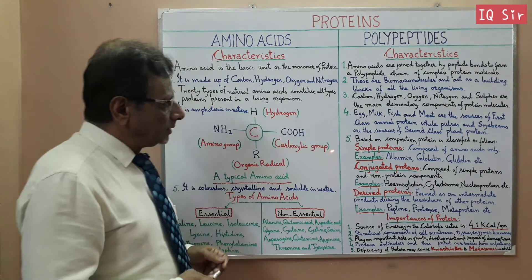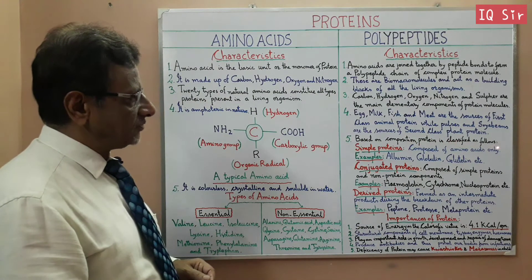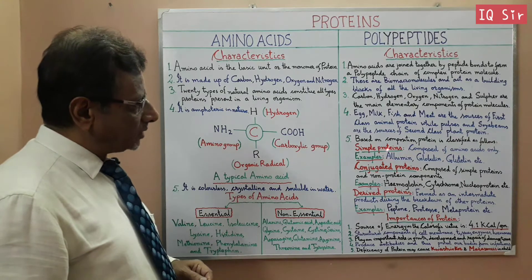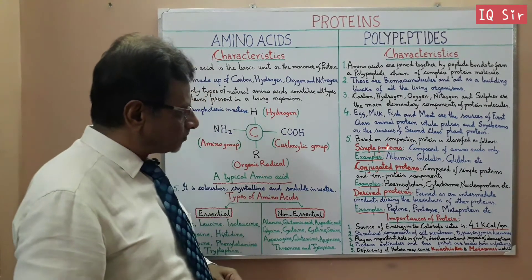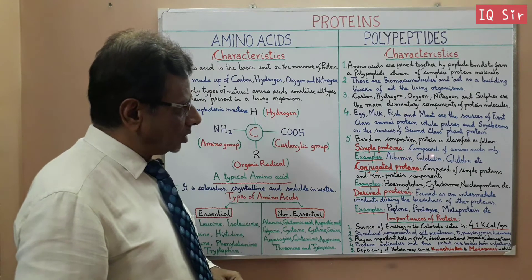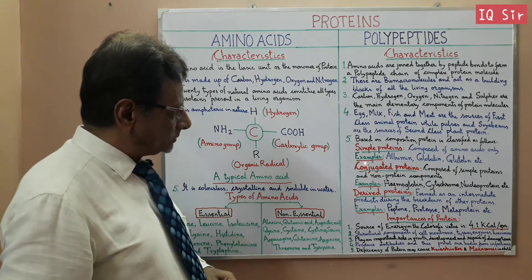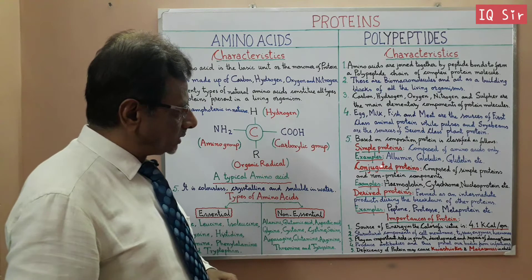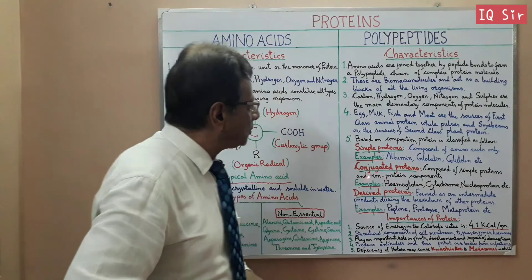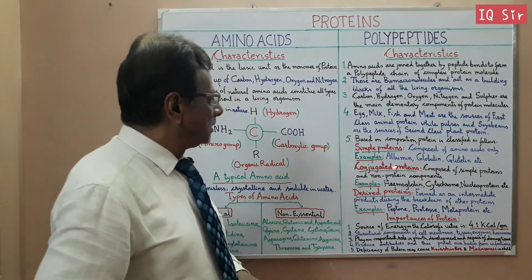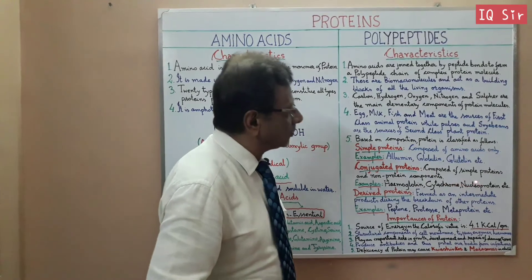Based on composition, protein is classified as follows. Simple protein is composed of amino acids only; examples are albumin, globulin, and prolamin, etc. Conjugated protein is composed of simple protein and non-protein components; examples are hemoglobin, cytochrome and nucleoprotein, etc.